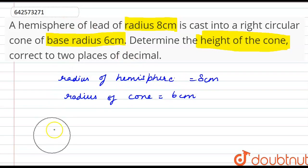So according to the question, as the cone is casted from the hemisphere, the volume of hemisphere should be equal to the volume of cone.